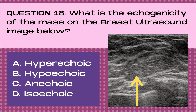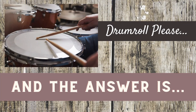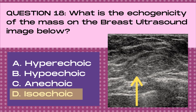Question 18. What is the echogenicity of the mass on the breast ultrasound image below, represented by the yellow arrow? A. Hypoechoic, B. Hypoechoic, C. Anechoic, or D. Isoechoic. And the answer is D. Isoechoic. Isoechoic masses on ultrasound are a medium gray color. They're the hardest masses to find on a breast ultrasound because they really blend in with the echogenicity of the surrounding fat. It's very hard to make out the mass on the ultrasound because it has the same echogenicity as the surrounding fat. Isoechoic masses on ultrasound tend to be benign.